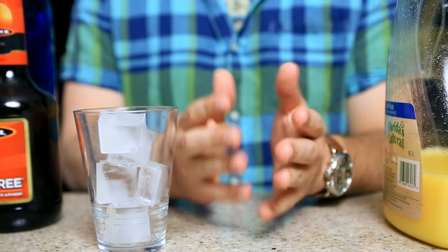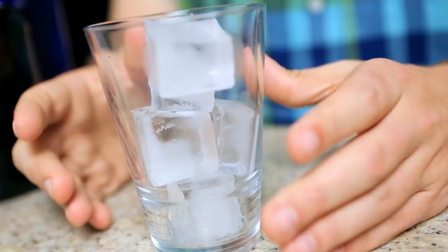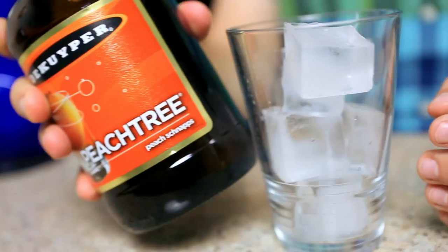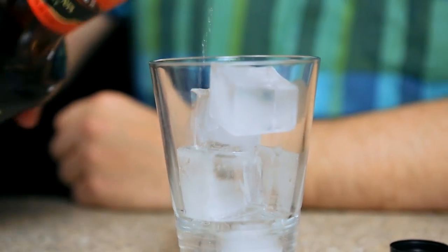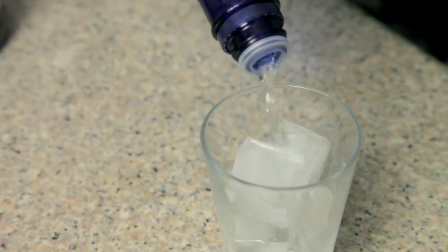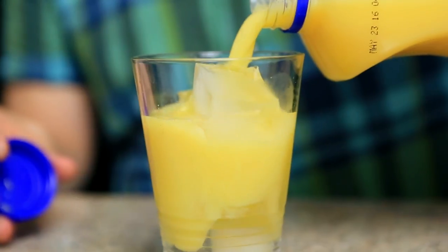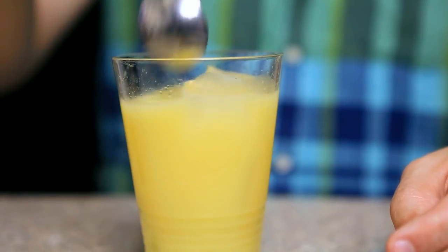A fuzzy navel is so simple, I'm not even going to measure stuff. So we have a glass full of ice, we have our schnapps, one part schnapps, one part vodka, and then we top with orange juice, give it a light stir to combine, and that's it.